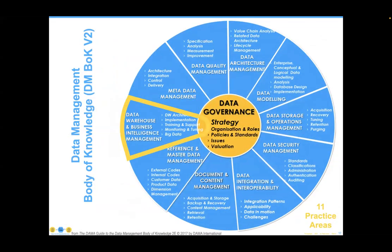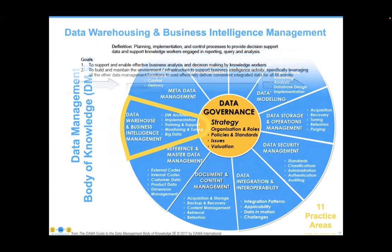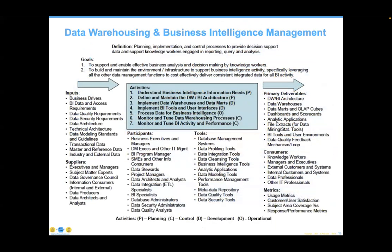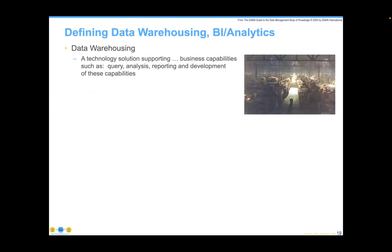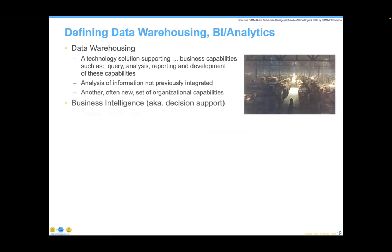A definition of warehousing is in order. Broadly, it is a technology solution that supports business capabilities such as query, analysis, and reporting. Some people say it's analysis of information that hasn't been previously integrated. Some say it's a new set of organizational capabilities. Shifting to business intelligence, even though these are often linked, the BI conversation has existed since 1958 and has always been focused on improving decision-making processes — looking at historical patterns to predict or improve future performance. Some people reduce it to simply 'using math in business.' There's no standard definition, and notably none of them necessarily involve technology.